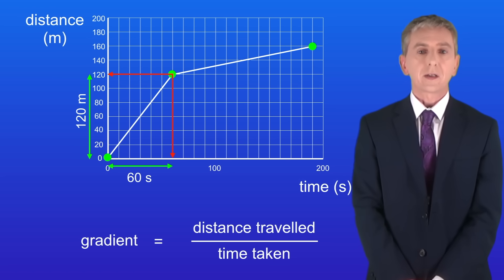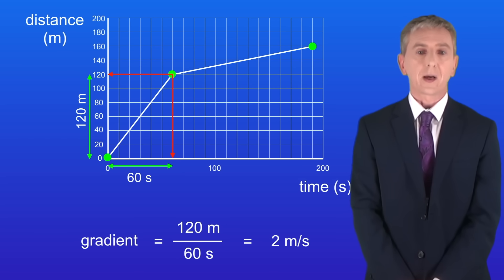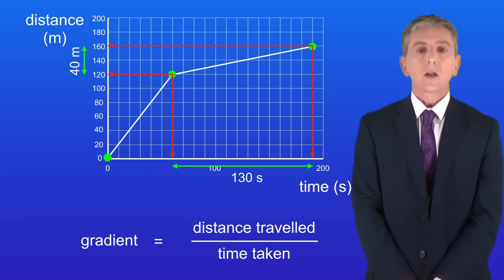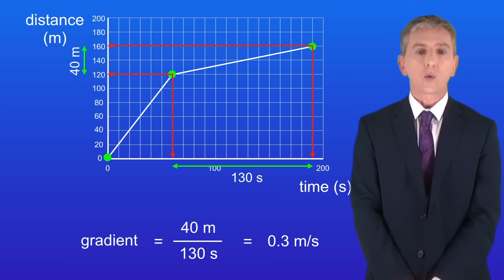Looking at the first part of the graph the distance traveled is 120 meters and the time taken is 60 seconds. Dividing 120 by 60 gives us a speed of 2 meters per second. Looking at the second part of the graph the distance traveled is 40 meters and the time taken is 130 seconds. Dividing 40 by 130 gives us a speed of 0.3 meters per second to one decimal place.